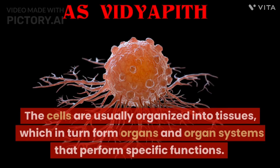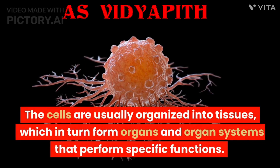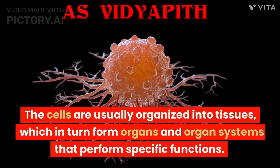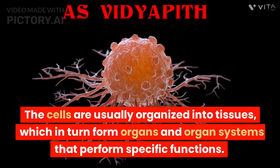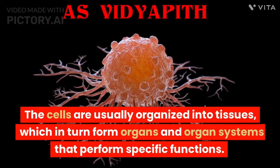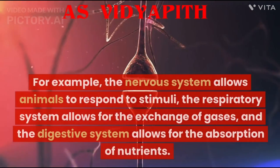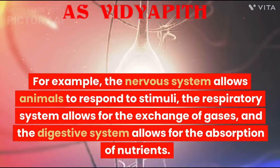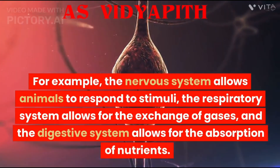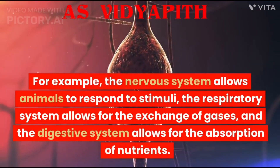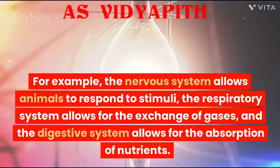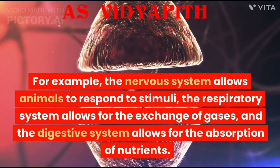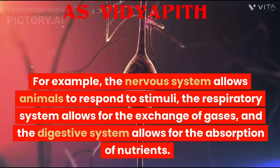The cells are usually organized into tissues, which in turn form organs and organ systems that perform specific functions. For example, the nervous system allows animals to respond to stimuli, the respiratory system allows for the exchange of gases, and the digestive system allows for the absorption of nutrients.